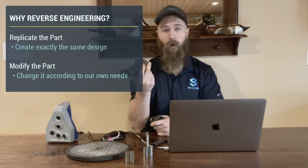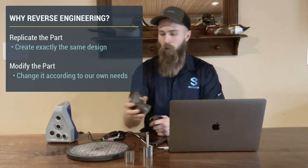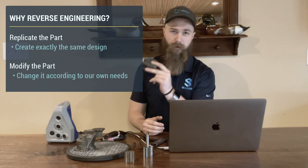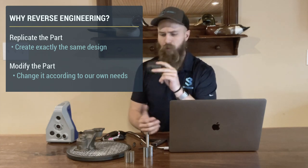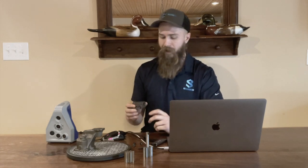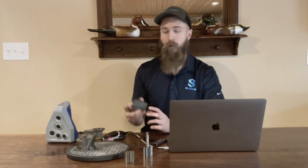With reverse engineering of mechanical parts, we can do this for a couple of different reasons. One is to replicate the part exactly as it was — a common application. Or we want to take the part, build out all the core components that are necessary, and then modify certain aspects for our own needs. That's really the concept we're going to be using here. We're not going to be as concerned with replicating this part exactly, but rather modifying it in a few different ways to make it more accurate and precise for our own application.